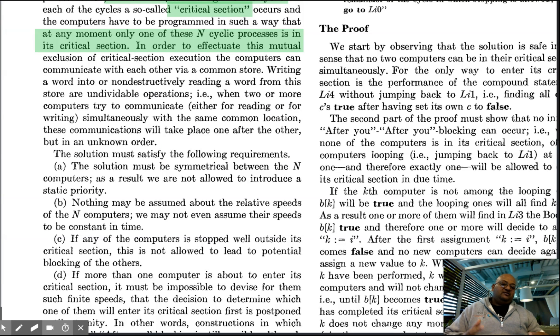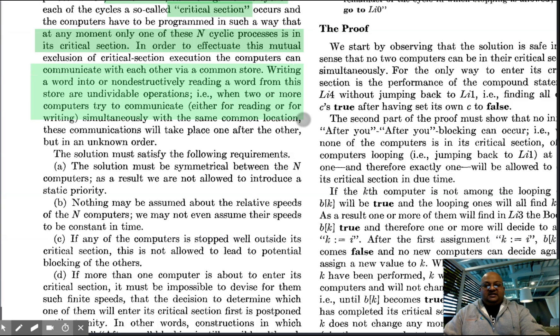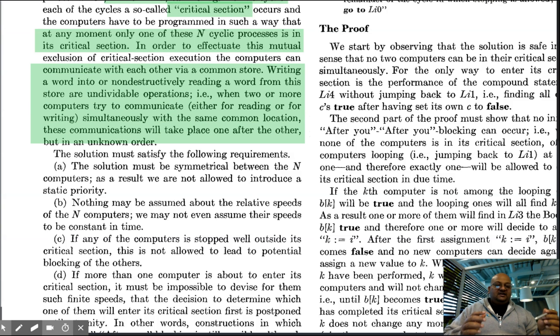Now, whenever we try to implement some kind of mutual exclusion, we have to assume that the underlying hardware gives us some primitive to build this on top of. Most modern chips have things like compare and exchange or test and set, which let you build mutual exclusion. For the purposes of this problem, though, Dijkstra is only assuming that reading and writing words from memory is atomic.